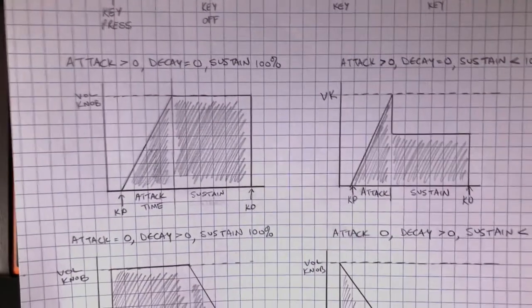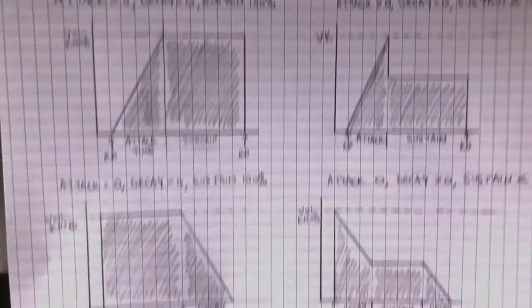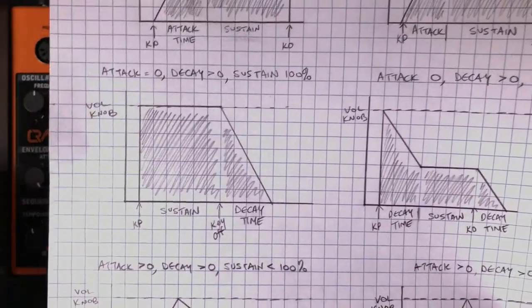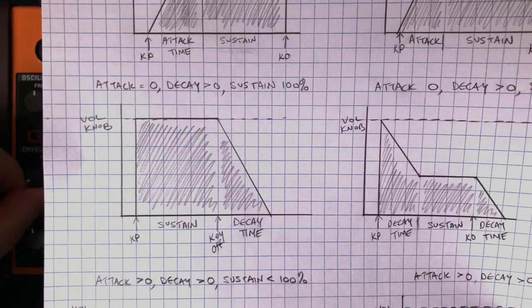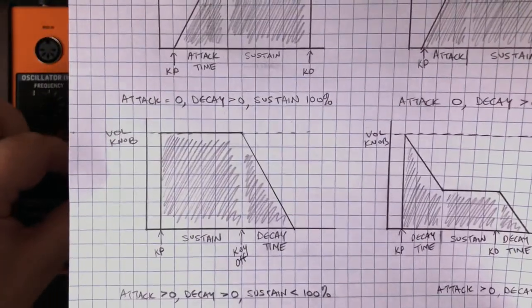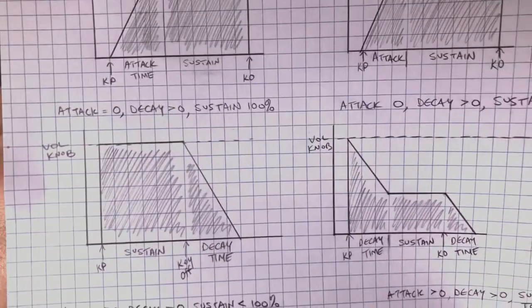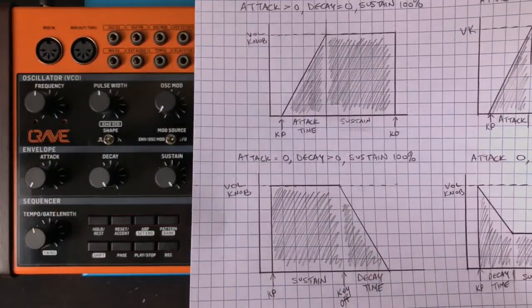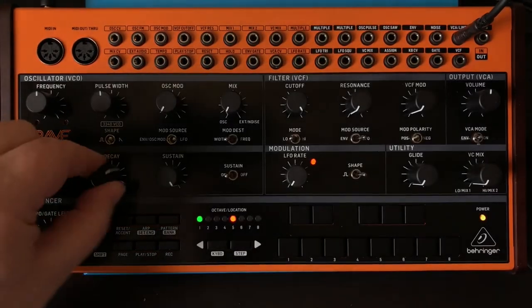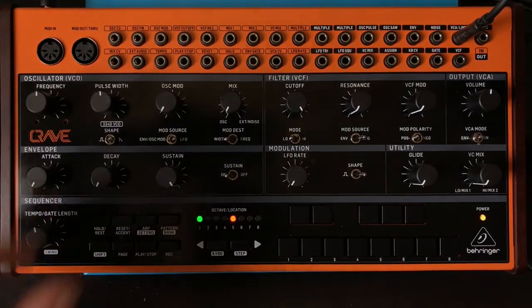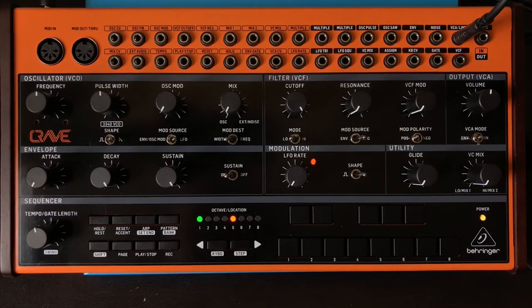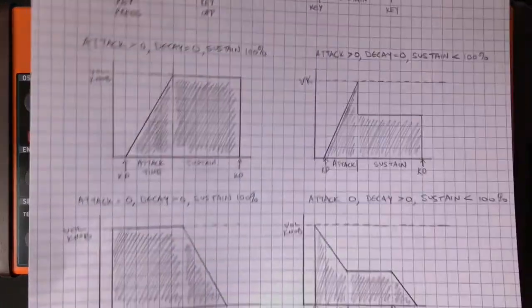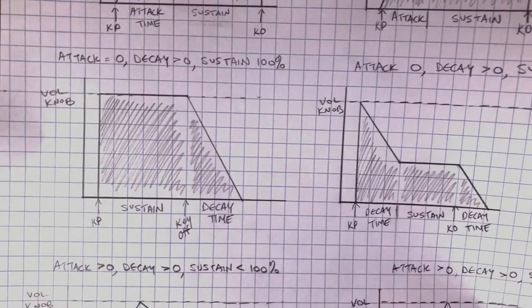Okay. Now we're going to work with the decay knob instead of the attack knob. So I'm going to set my attack to zero, and my decay I'm going to turn up. And I'm going to set my sustain back to 100%. Now, the decay is also a function of time. So at zero, instant decay. All the way up, the longest amount of decay.